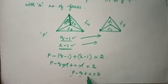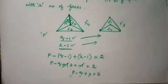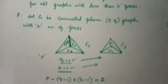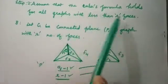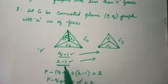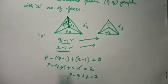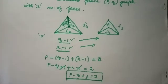So P minus Q plus R equals 2, which is the required result for the graph G. We took a connected graph with P vertices, Q edges, and R faces, removed a non-cut edge to reduce faces by one, applied the induction hypothesis, and proved that Euler's formula holds. Thank you.